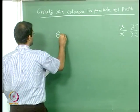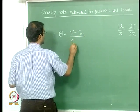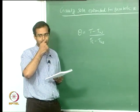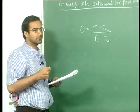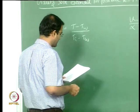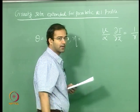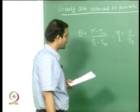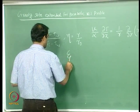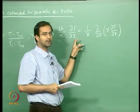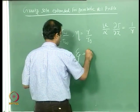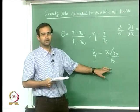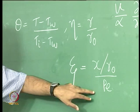For temperature, we introduce θ = (T - T_wall)/(T_inlet - T_wall), so that at x = 0, θ = 1, and at R = R₀, θ = 0. At R = 0, θ should be finite. We introduce a non-dimensional radial coordinate η = R/R₀, and a non-dimensional axial coordinate ζ defined as (x/R₀)/Peclet number. This grouping is convenient because the solution naturally involves x/(D₀ × Pe) as a single group.